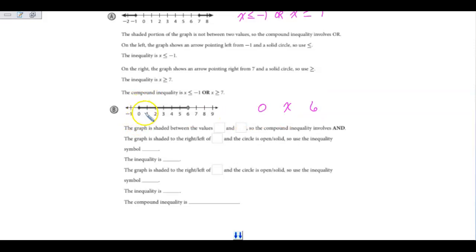When I look at 0, I see that it's closed, so it's going to have an OR equal to. And it's every number that's larger than 0. So it could be 0, and it could be larger than 0.